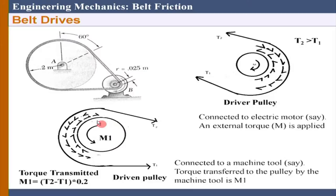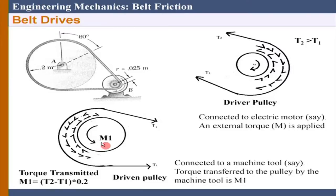For the driven pulley, there is a machine tool attached. That machine tool will give a force back - a torque back, as per Newton's third law, onto the drum. So ultimately you are transmitting a torque T2 minus T1 times R which is clockwise, but to show the equilibrium, the machine tool is giving back the torque to the drum which is M1. The driven pulley is rotated by the frictional resistance, and the transmitted torque is T2 minus T1 multiplied by R.